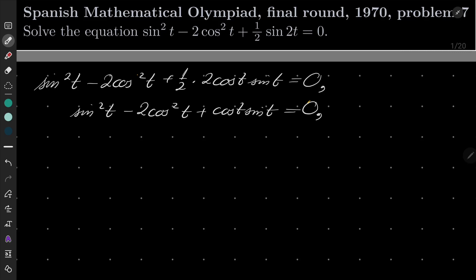Now I will divide both sides by cos²t. Is it justified? Yes it is, because if cos(t) were 0,